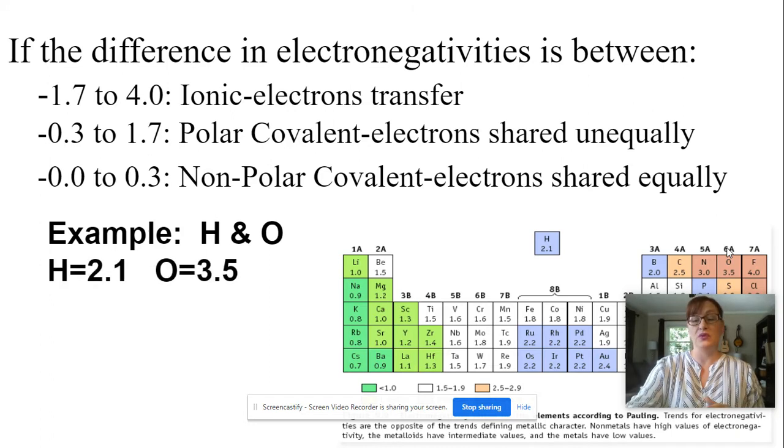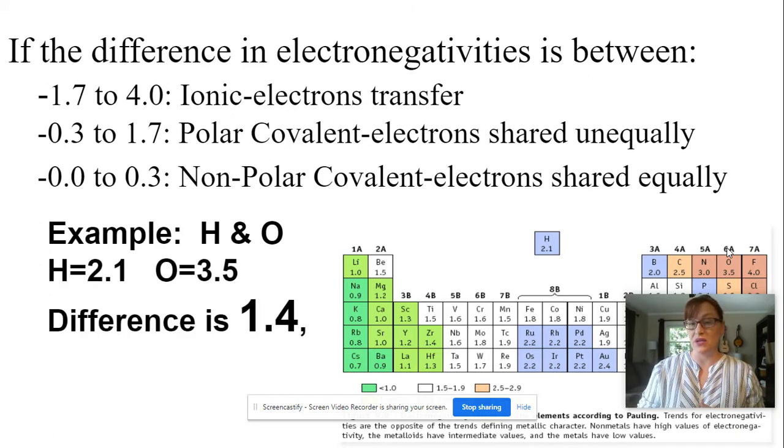So if I subtract, the difference ends up to be 1.4. If your electronegativity difference falls into certain categories, you can identify what type of compound you have. So let's look at the options.